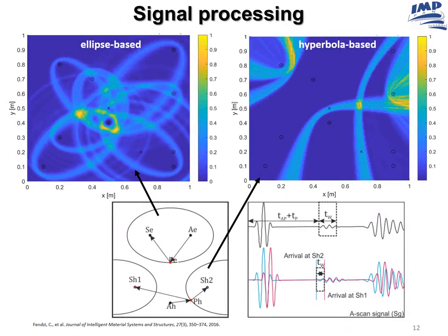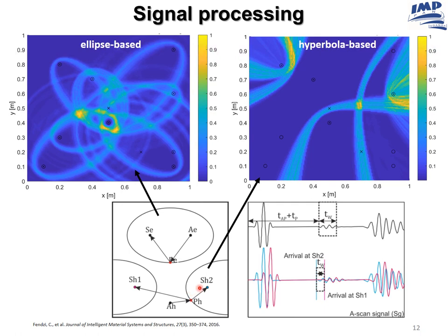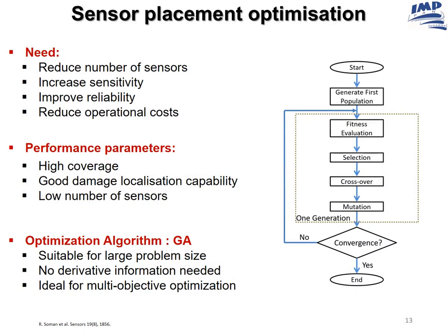Coming to signal processing approaches for sensor networks, the two most popular techniques are ellipsis-based and hyperbola-based. The ellipsis-based method analyzes the time of flight from the actuator to an arbitrary point and to the sensor, while the hyperbola-based method uses an actuator and two sensors and analyzes the time difference of arrival at each sensor. The results of such methods indicate the location of defects in the investigated object. The placement of sensors is very crucial, and there are various approaches to properly place sensors on the structure's surface to obtain good damage assessment results.